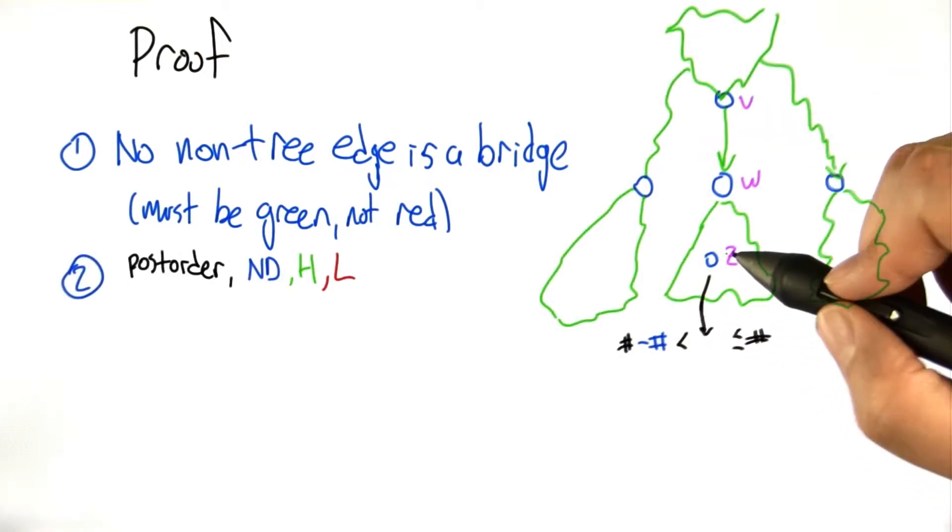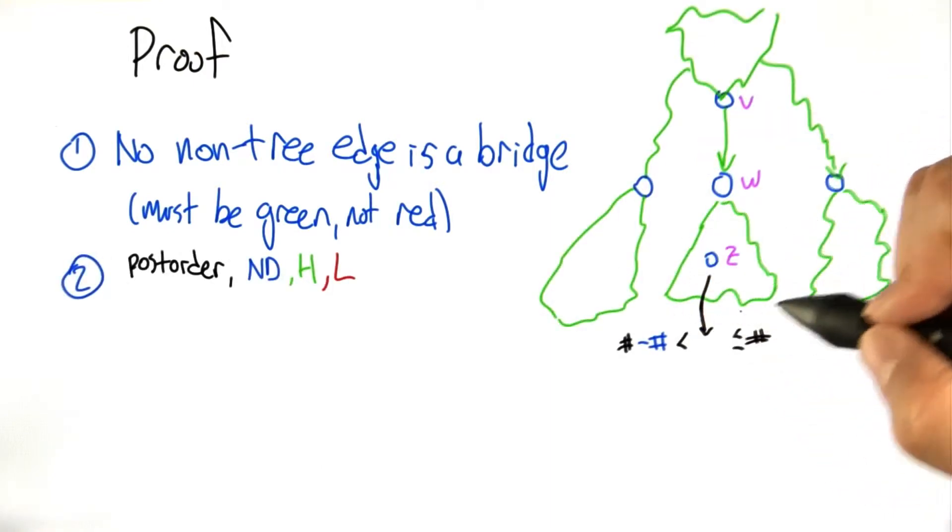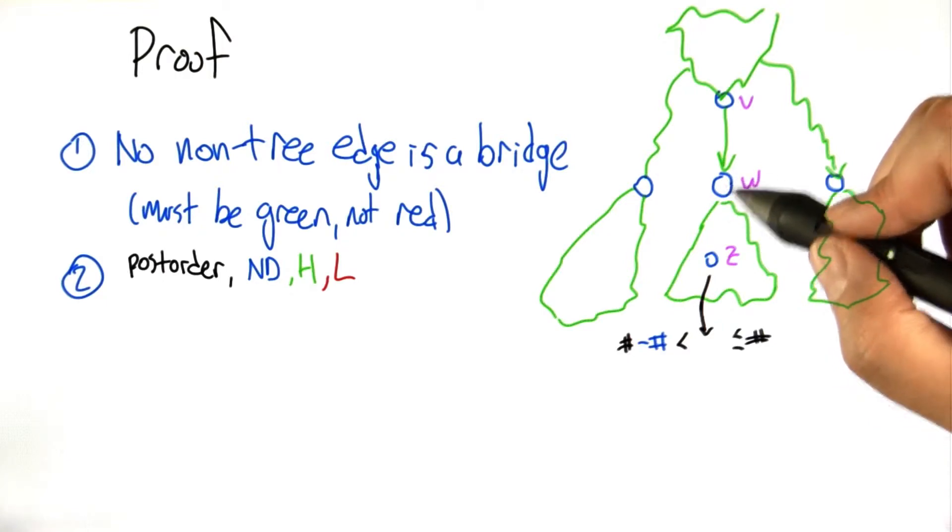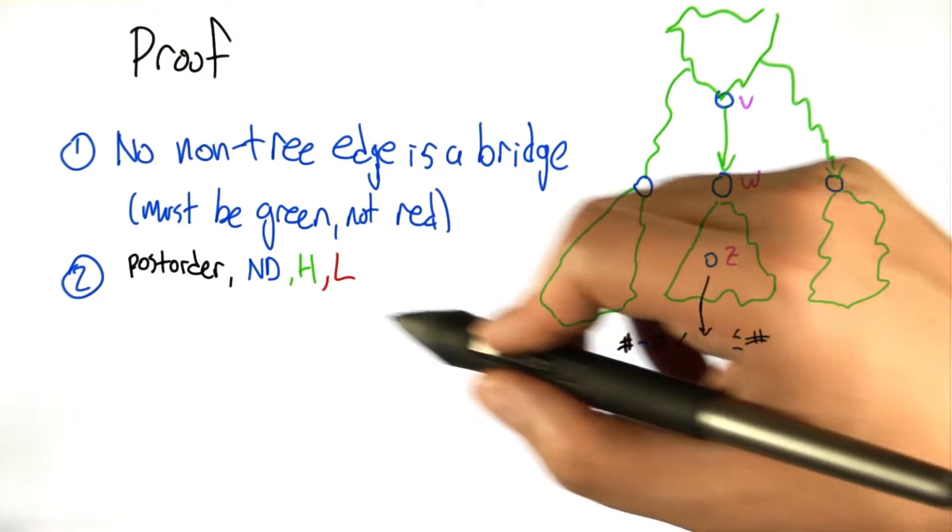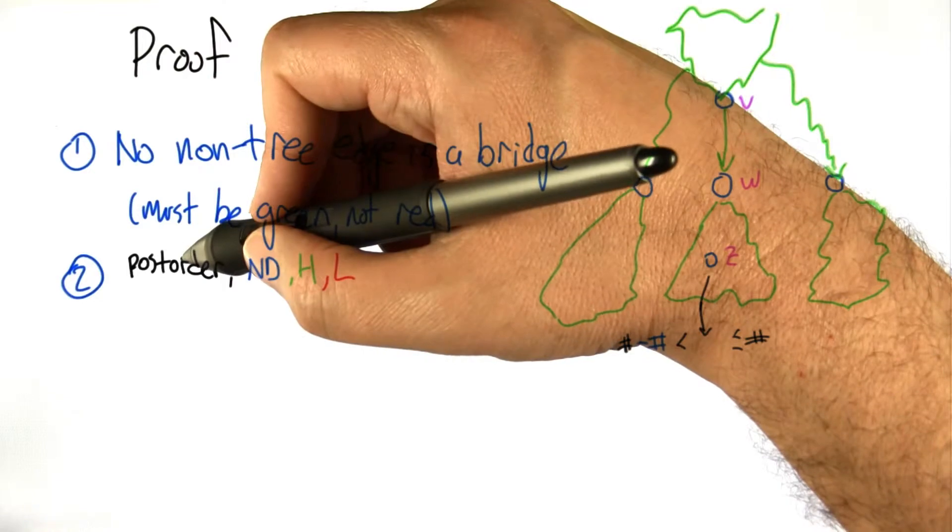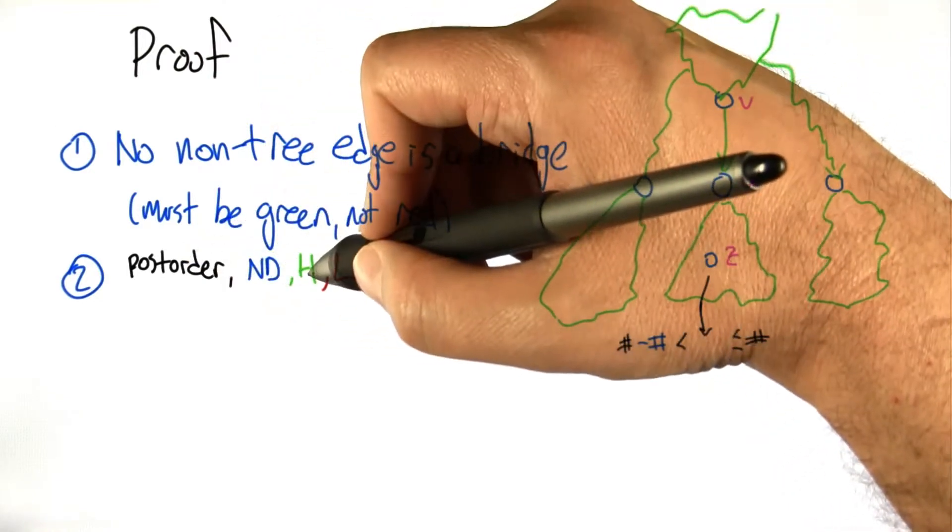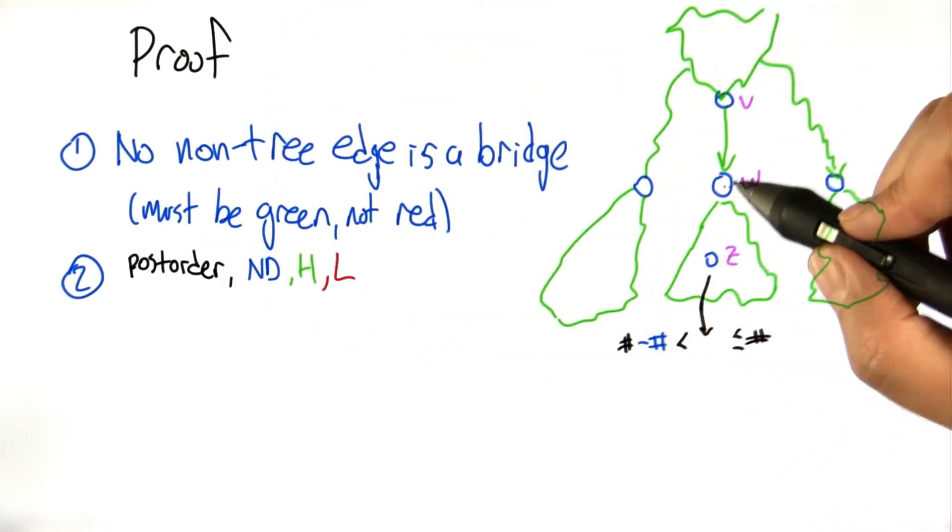Next, we can test whether or not a given node is in the subtree rooted at some node w, pretty simply using the numbers that we've already calculated: the postorder of w, the number of descendants of w, and the high and low values. And why is that?